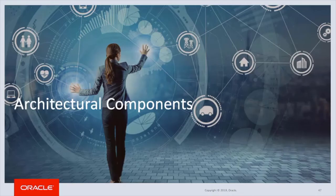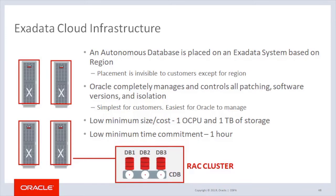We have now reviewed the Oracle Cloud Infrastructure and the Autonomous Database key features. Now let's take a deeper look at the architectural components. The Autonomous Database is placed on an Exadata system based on the region where the customer is located or closest to. This placement, except for region location, is invisible to the customer, but is done to minimize traffic latency and maximize data center efficiency.